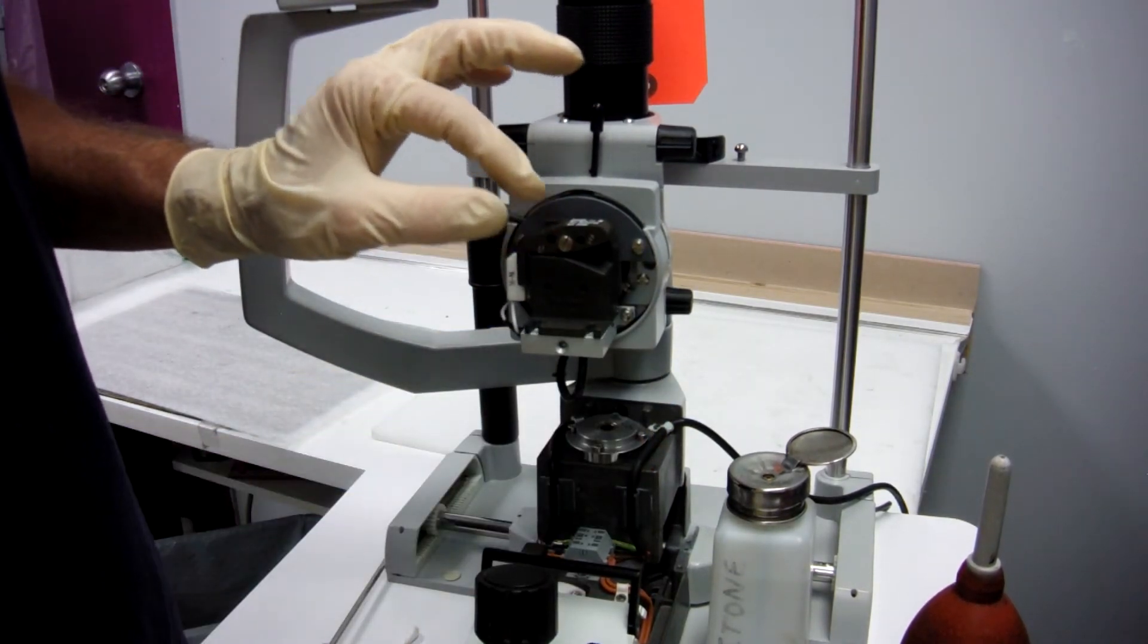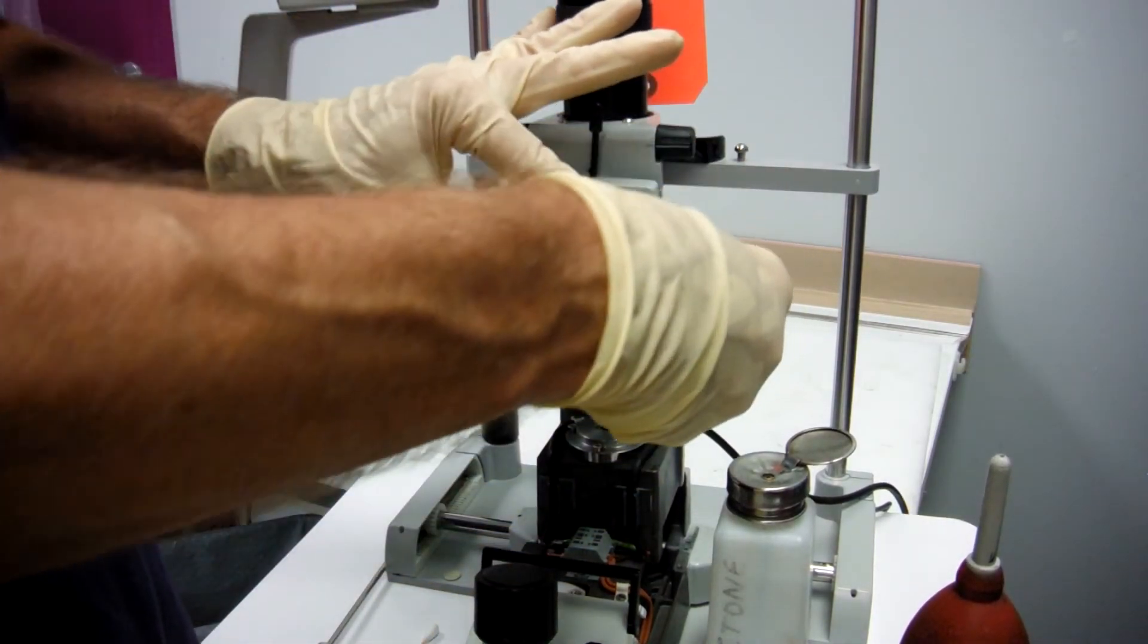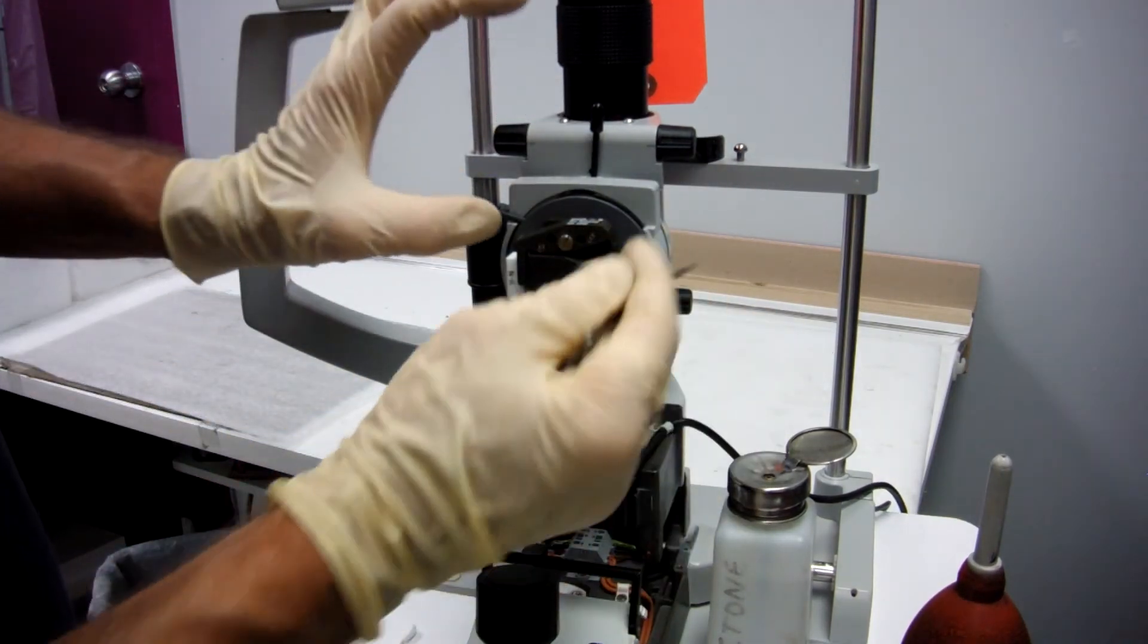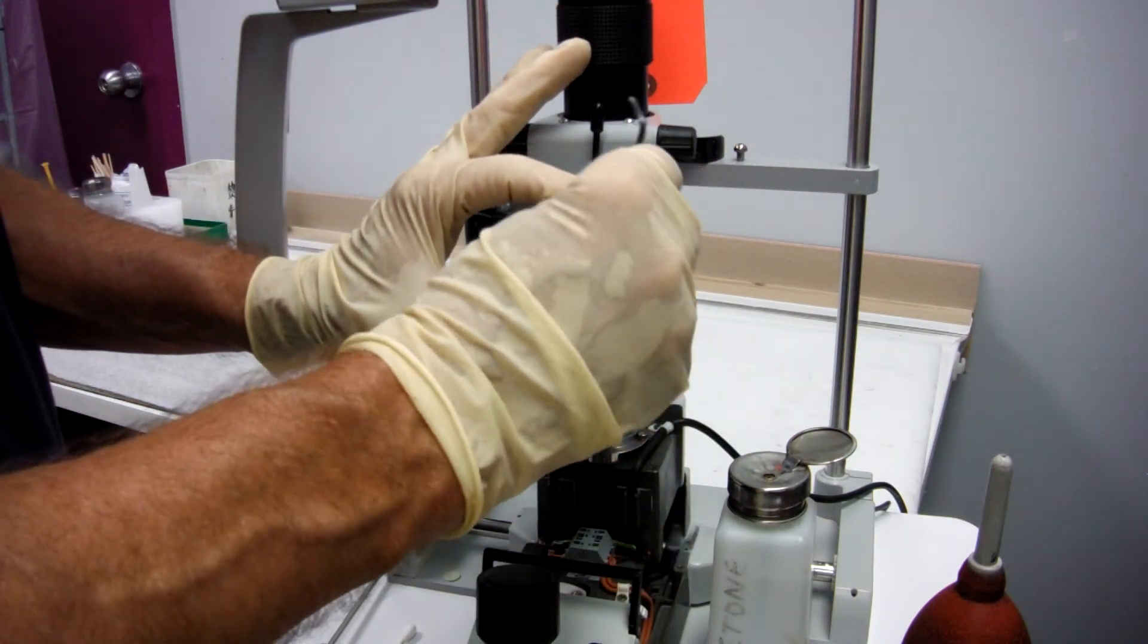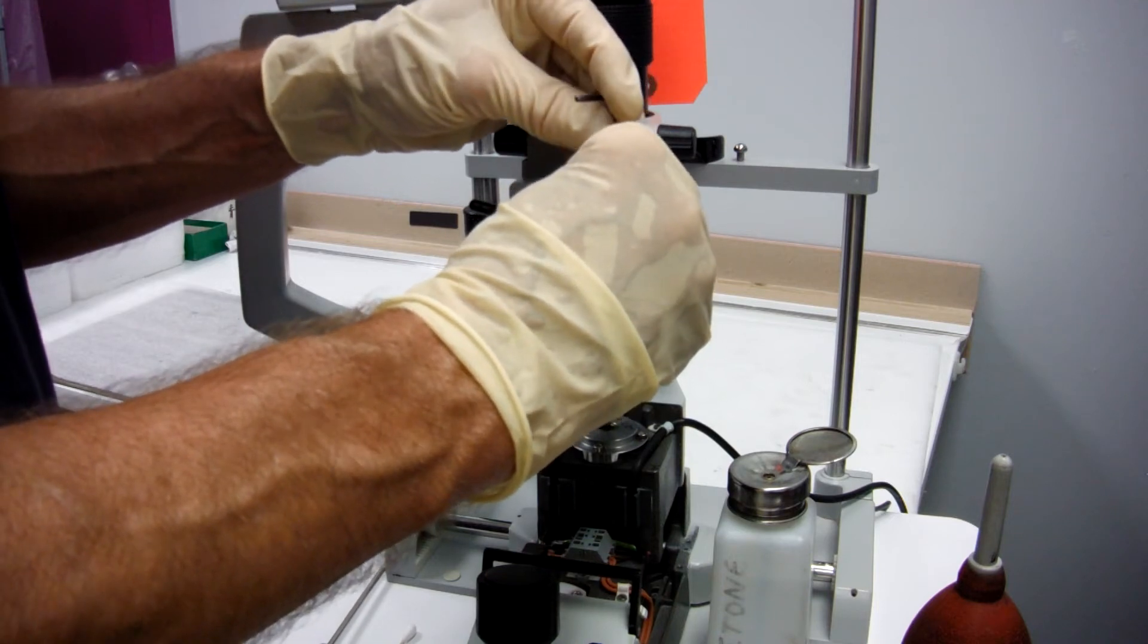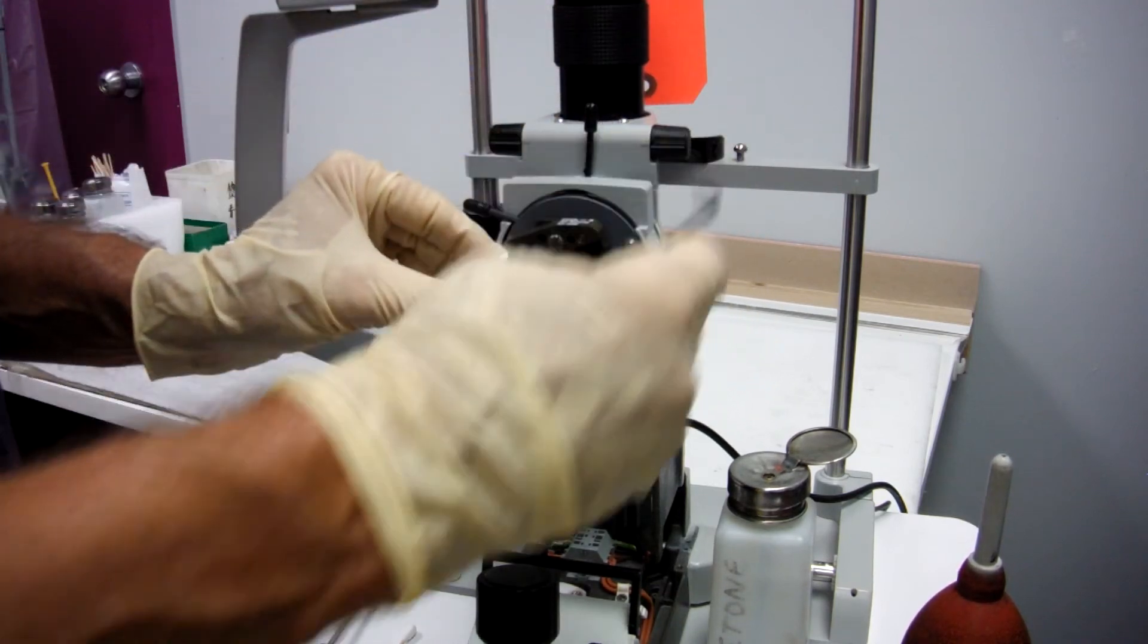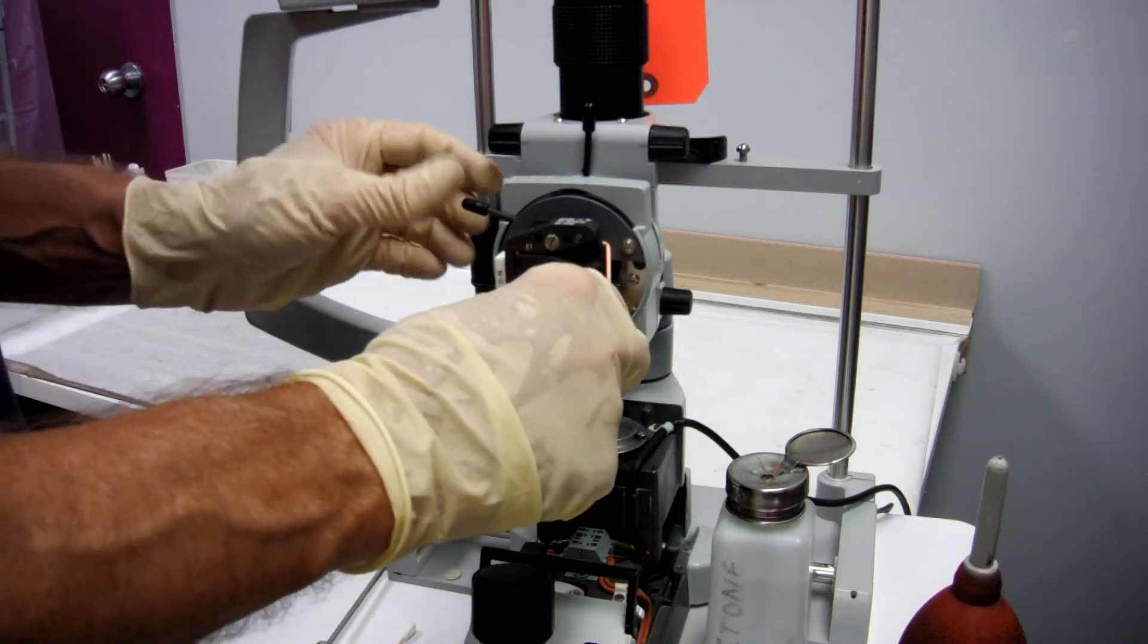What you can do is go ahead and put one screw in your light assembly because you're going to have to center your diaphragm assembly. Now that you've loosened it, now that you've removed it out of its original position, it might not be centered.